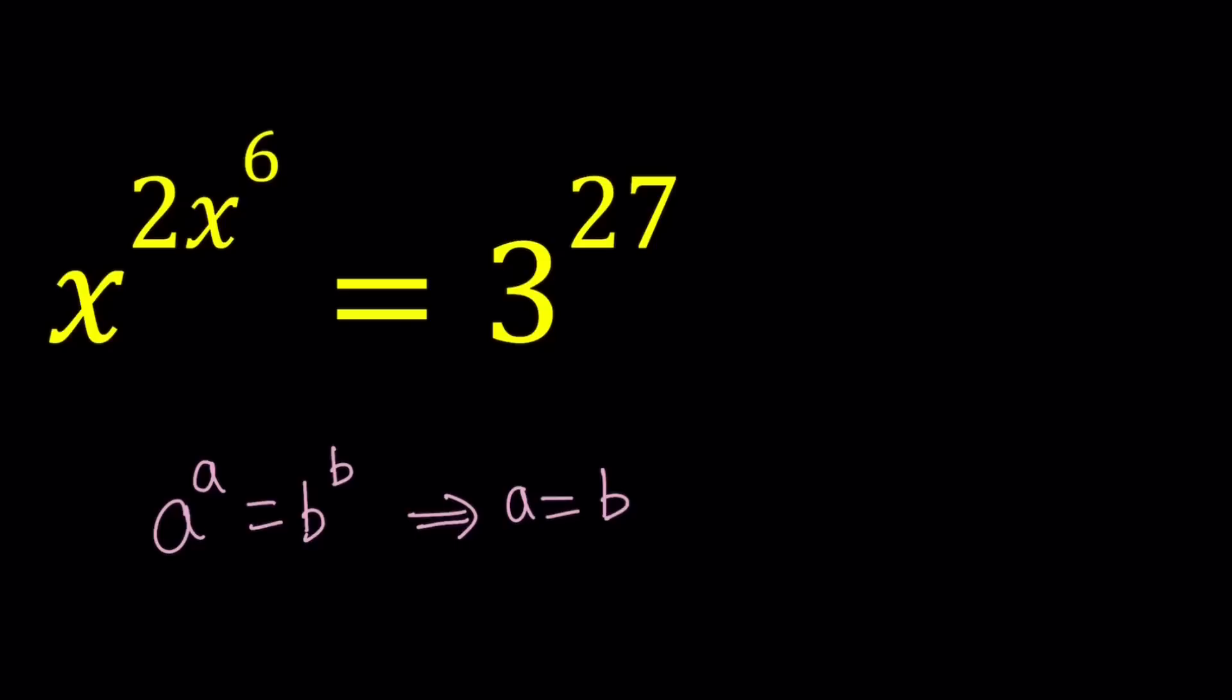Obviously, this doesn't have to be the only solution, because if you think about the graph of x to the power x, it kind of looks like this. 0, 1 is an open dot, because 0 to the power 0 does not equal 1.